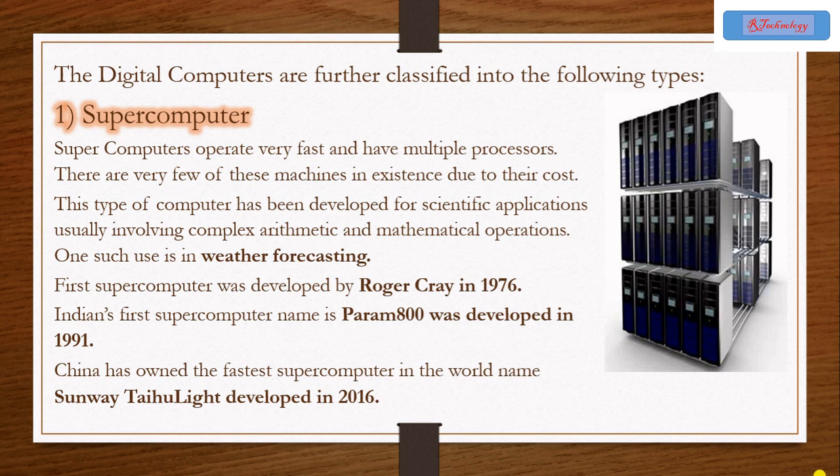One such use is in weather forecasting. The first supercomputer was developed by Roger Gray in 1976. India's first supercomputer named Param 8000 was developed in 1991. China has owned the fastest supercomputer in the world named Sunway Taihu Light developed in 2016.